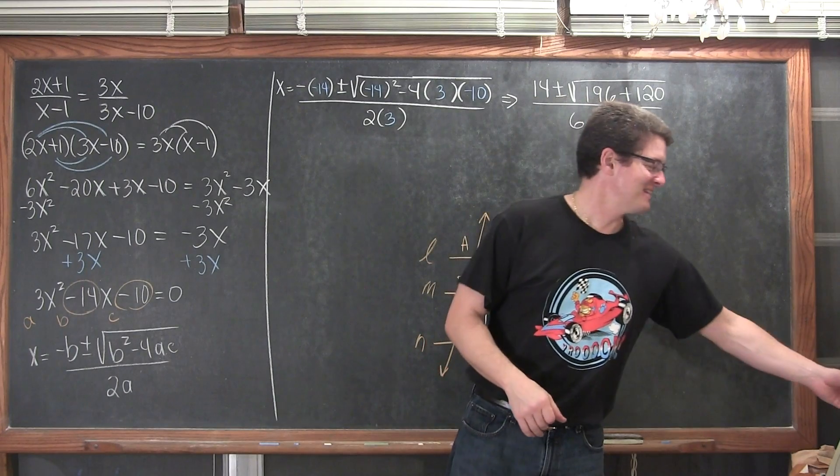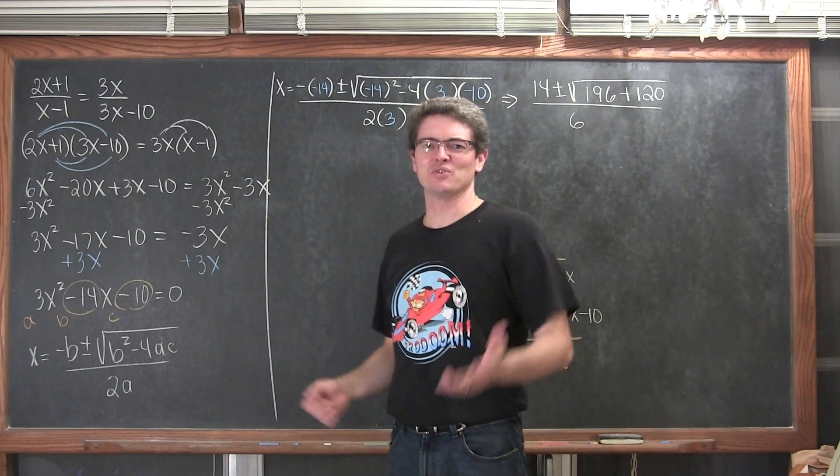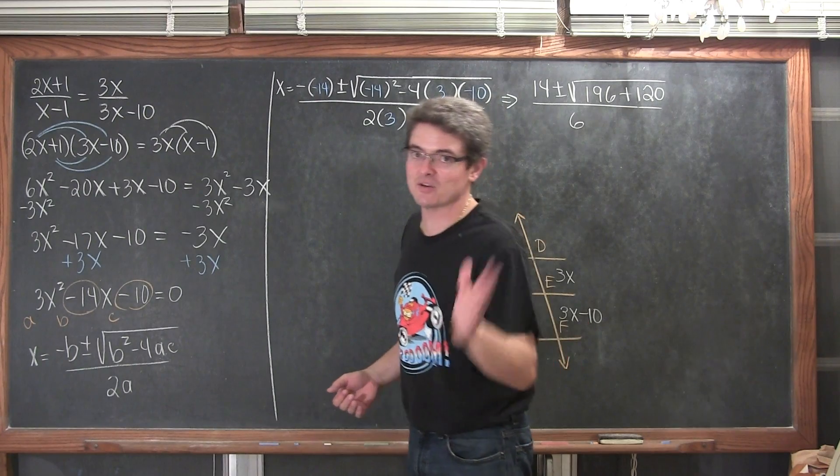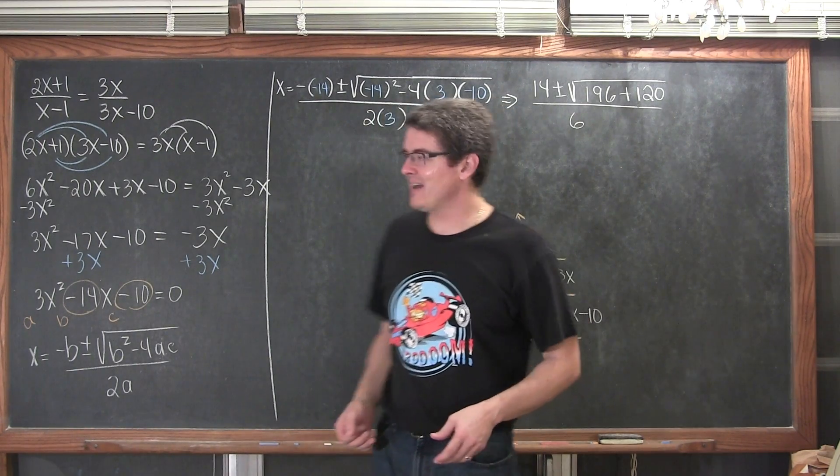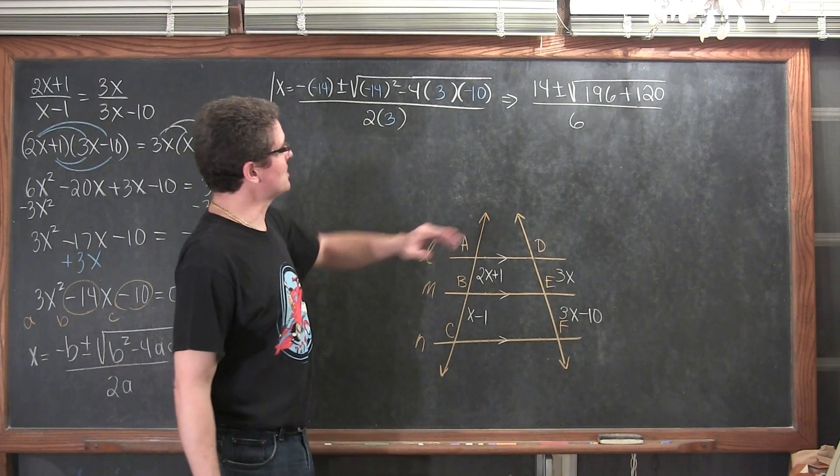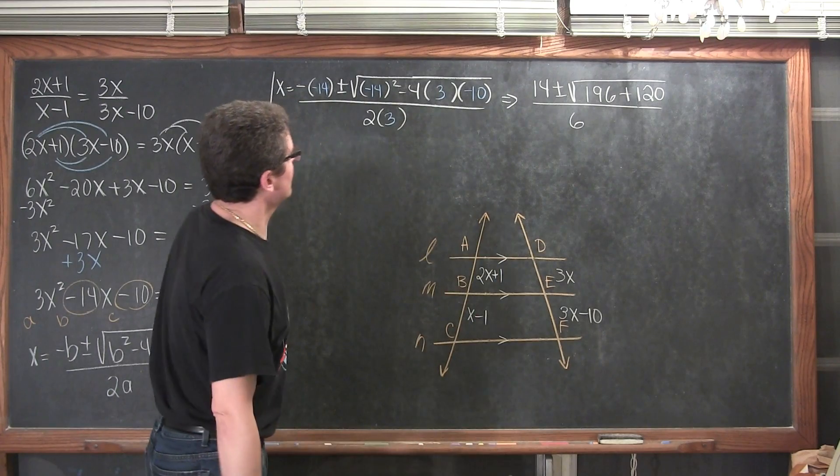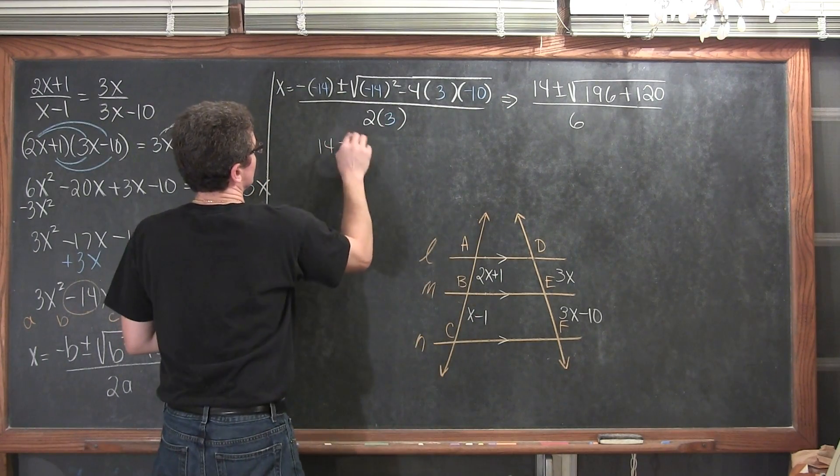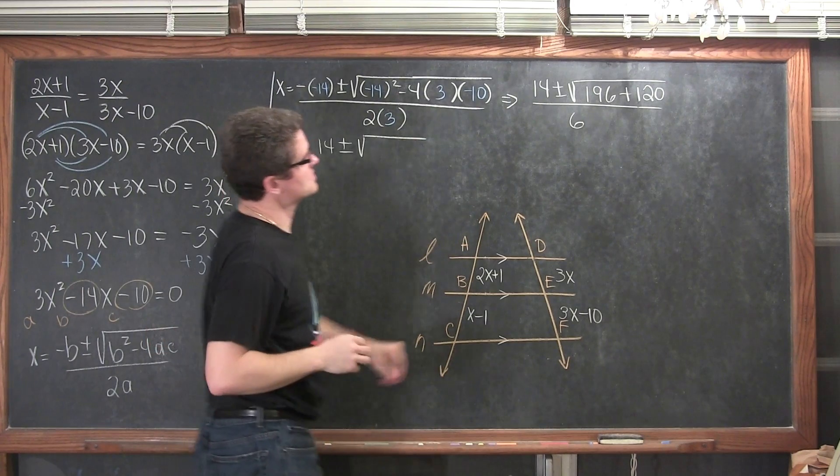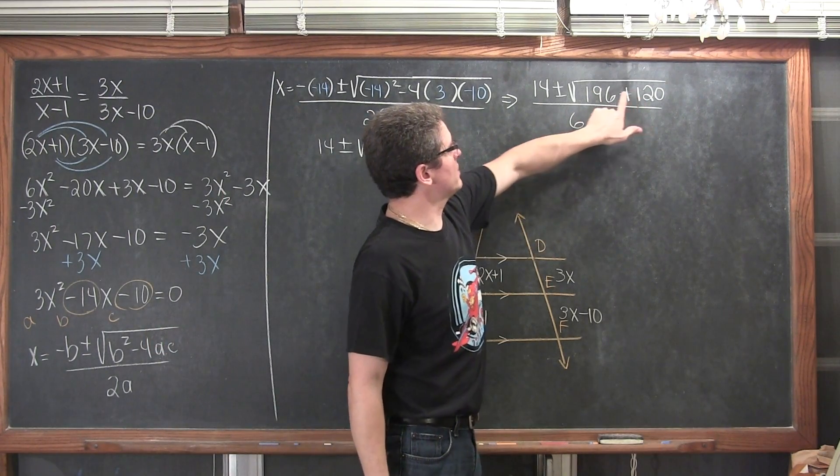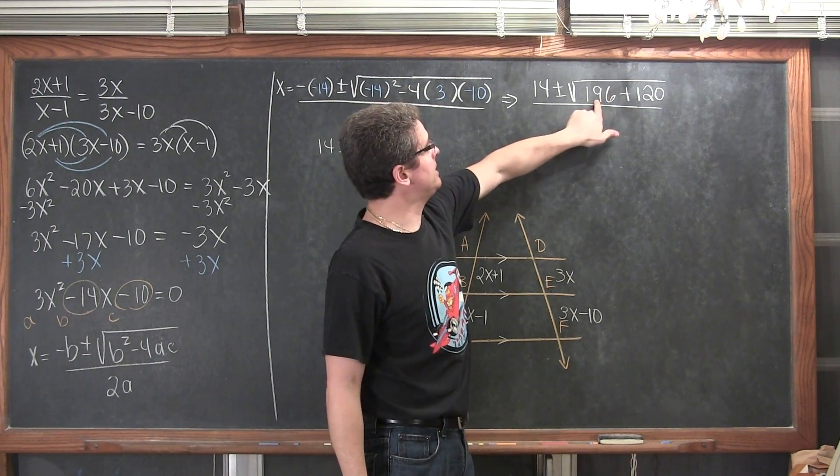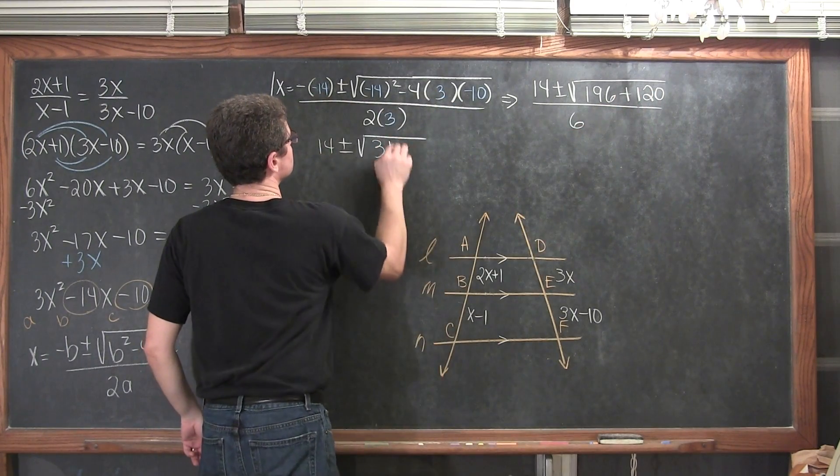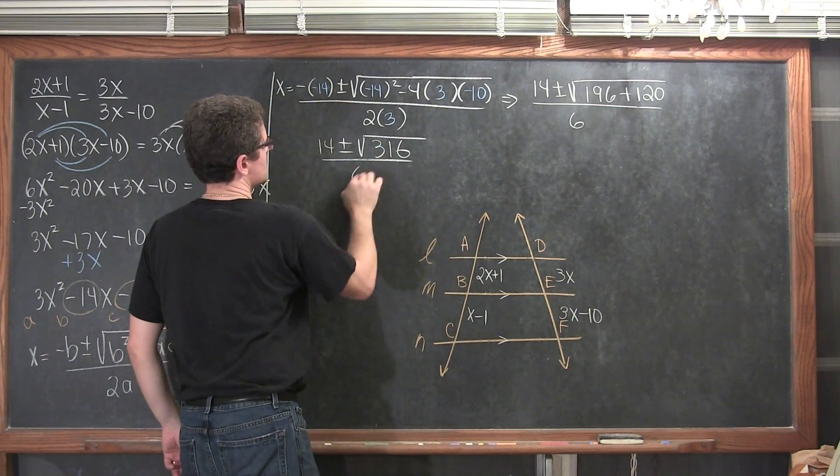Yes, in my notes I thought that 3 times 2 was equal to 5, not 6, so I had to redo my notes to finish this up. I was going to reshoot it, I thought about reshooting it, but I make mistakes, we all make mistakes, so I will let you see mine. At any rate, this is alright so far. So, we want to finish this up. We have 14 plus or minus the square root of 316, over 6.